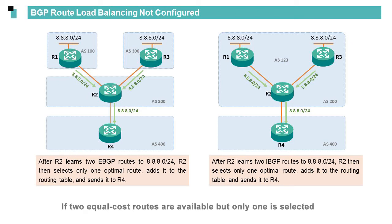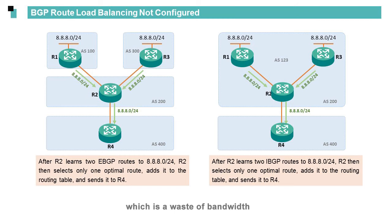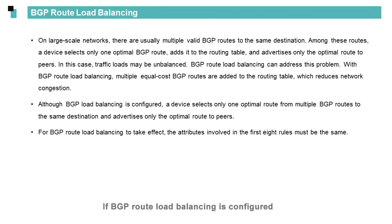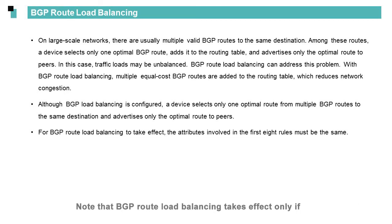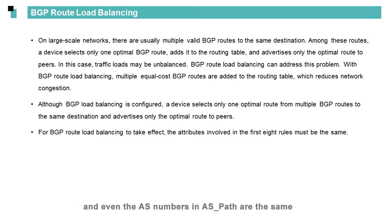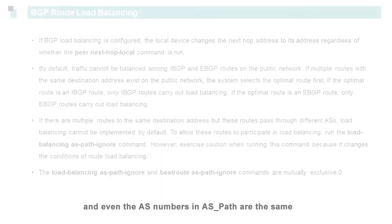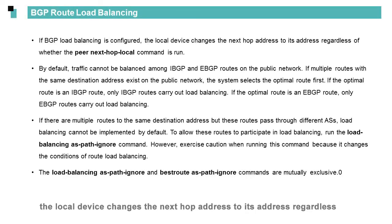If two equal cost routes are available but only one is selected, a link may be overburdened whereas other links are idle, which is a waste of bandwidth. If BGP route load balancing is configured, multiple equal cost routes are added to the routing table, but only one of these routes is selected as the optimal route and is advertised to peers. Note that BGP route load balancing takes effect only if the attributes involved in the first 8 rules are the same, and even the AS numbers in the AS path are the same. If BGP load balancing is configured, the local device changes the NextHop address to its own address regardless of whether the 'next-hop-local' command is run.